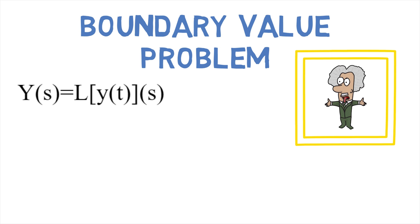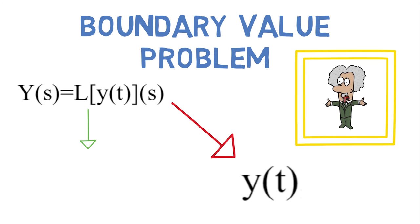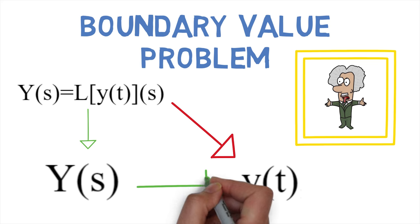Let capital Y of s equal Laplace transform of y of t of s. Instead of solving directly for y of t, we derive a new equation for capital Y of s, and once we find capital Y of s, we can inverse transform it to determine y of t.